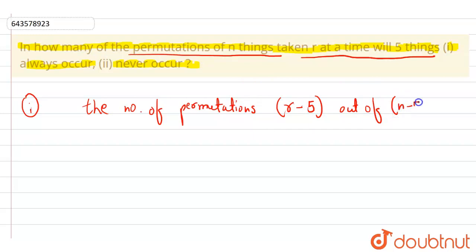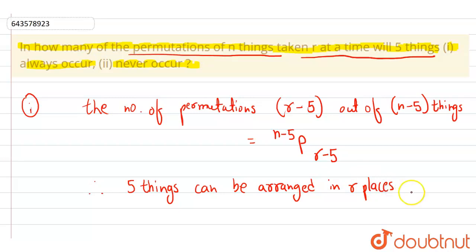Out of n minus 5 things. So this can be represented by the permutation, that is n-5 P r-5. Now let's arrange our 5 things in the r places that is mentioned in the question. Therefore, 5 things can be arranged in r places, and that is represented by r P 5.